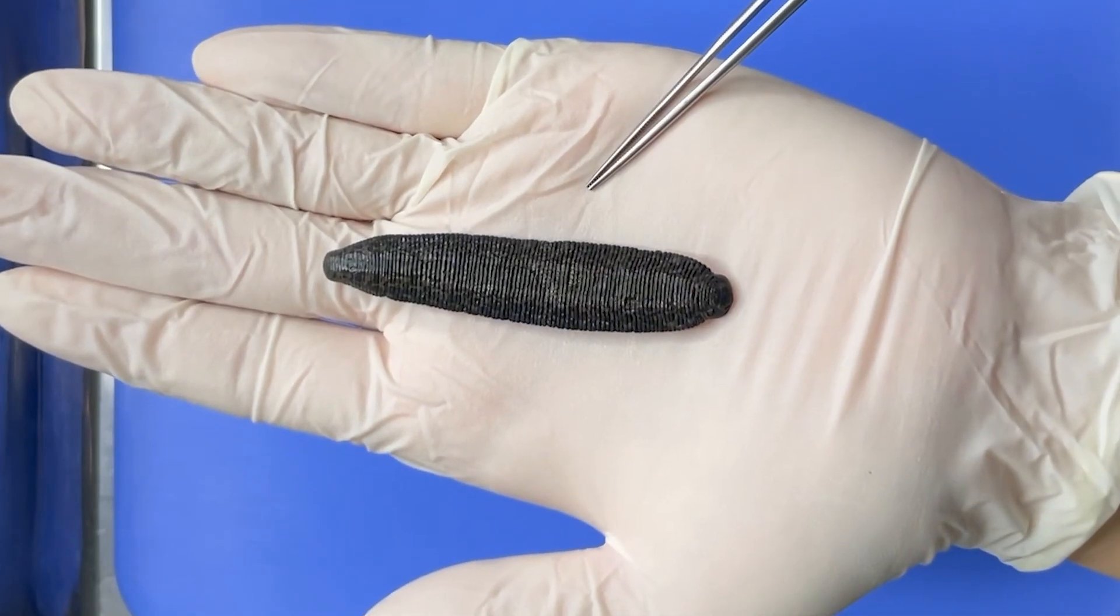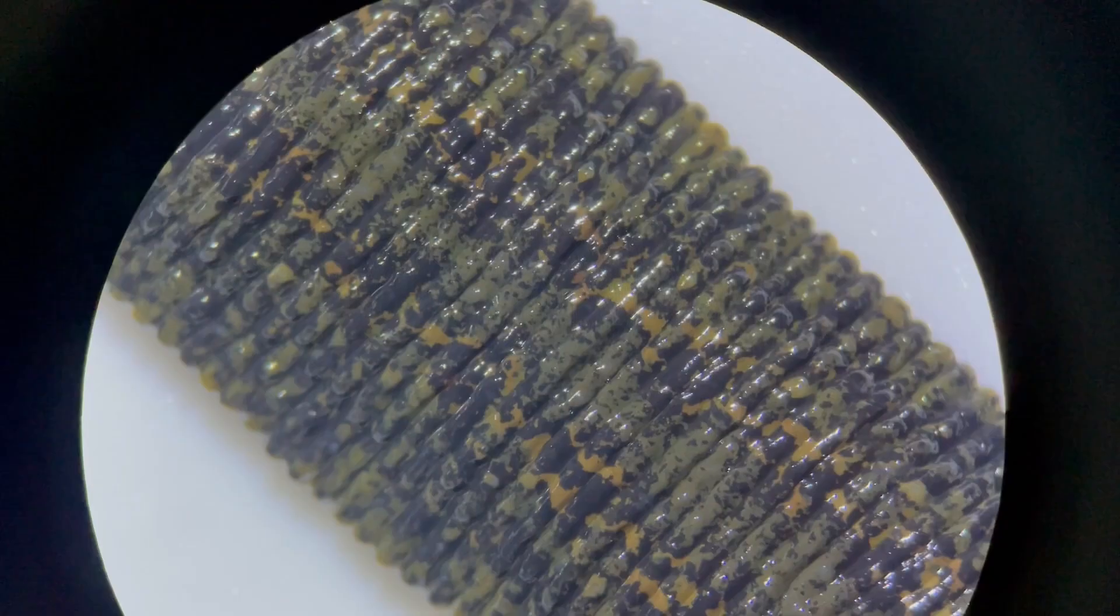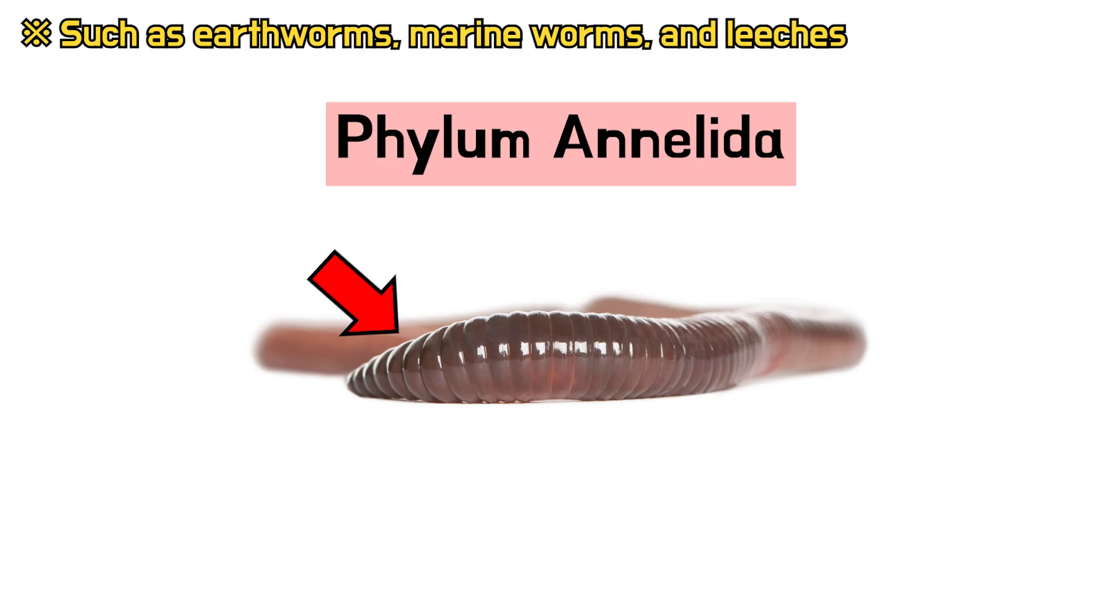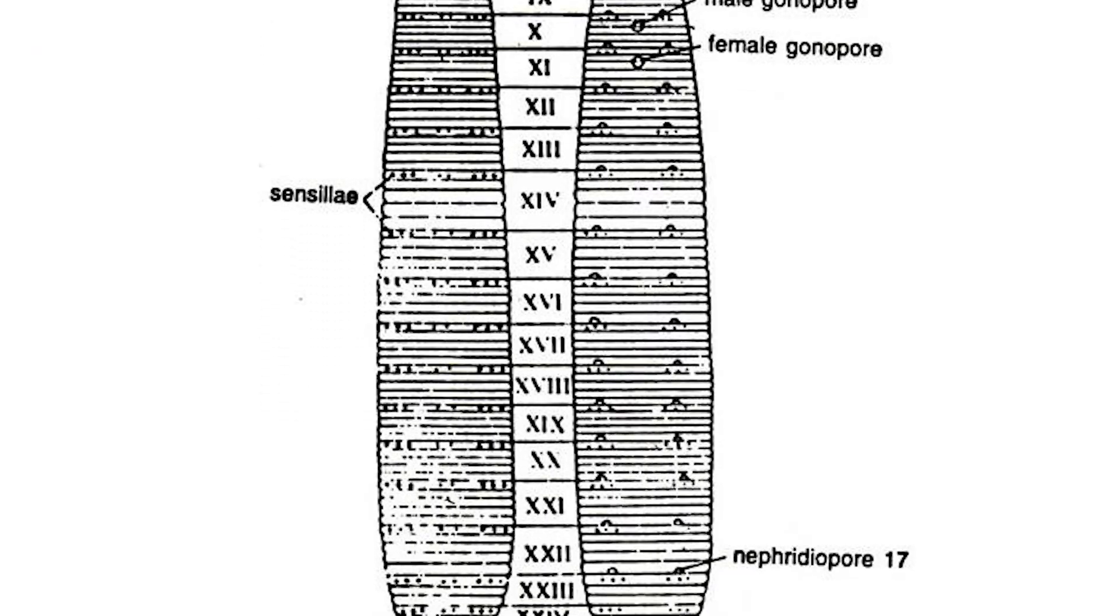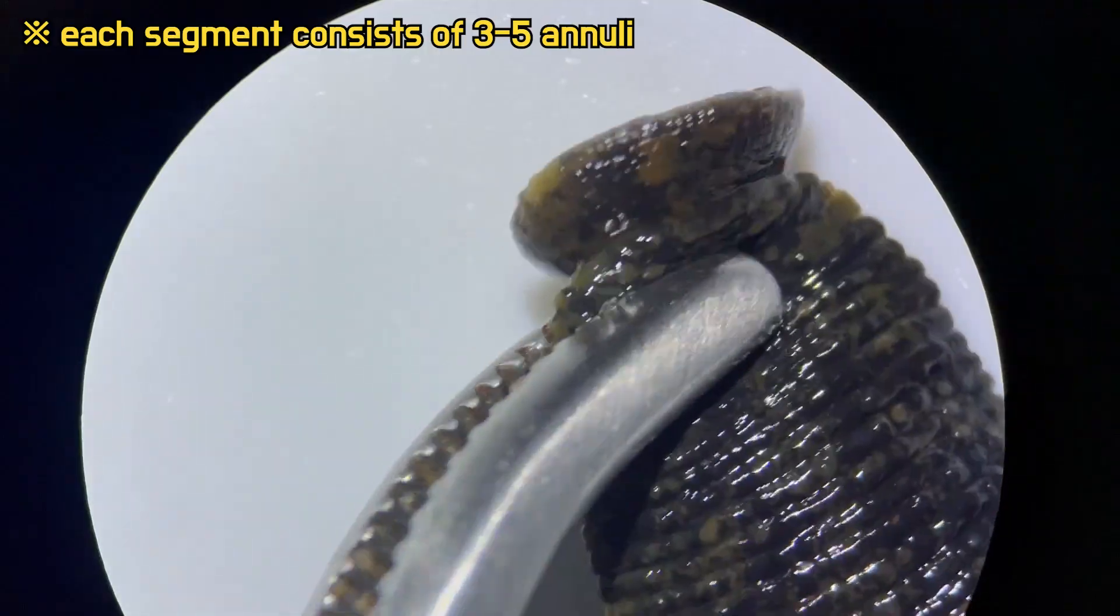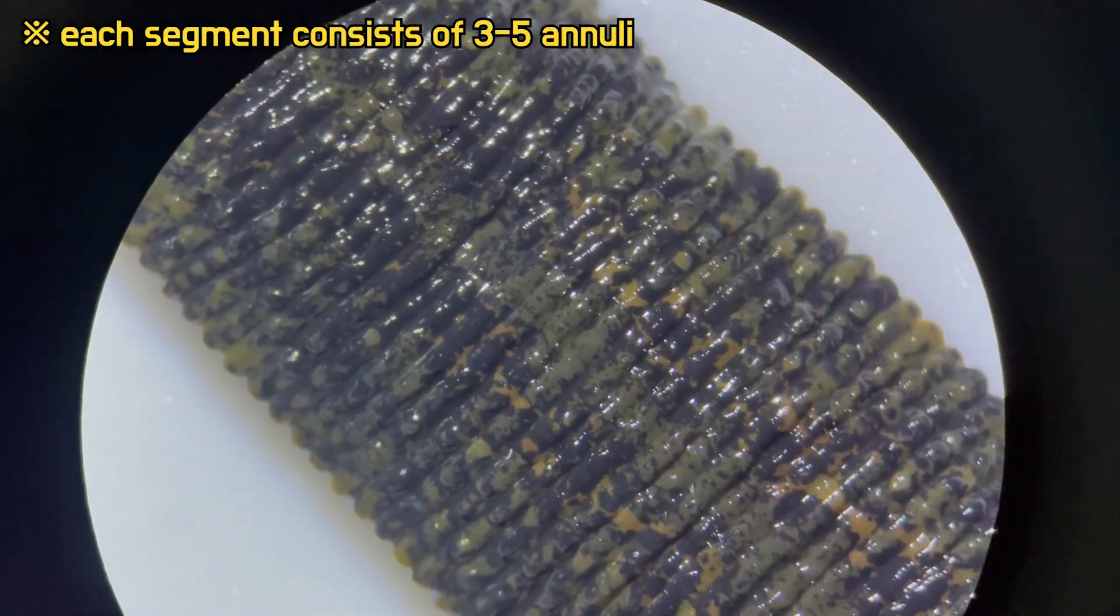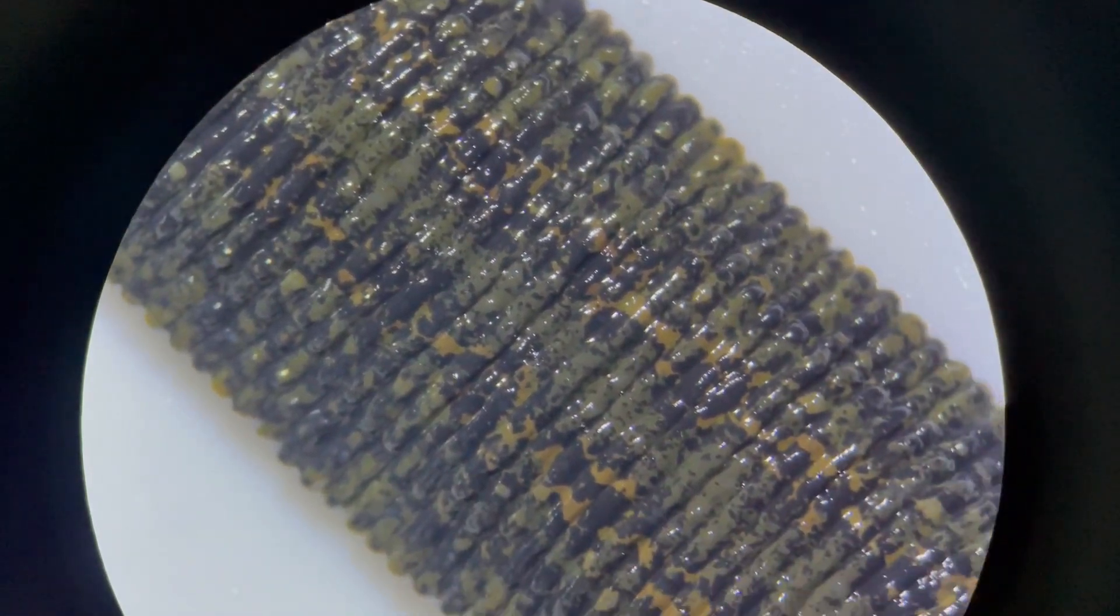First, let's take a closer look at the leech's body. Their body is divided into numerous ring-shaped segments. This is a characteristic feature of annelids. The actual body of a leech is composed of 33 segments, but each segment is further divided into multiple annuli, resulting in a large number of segments.